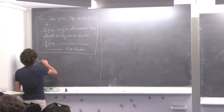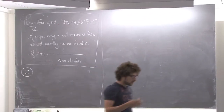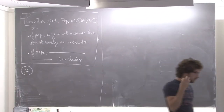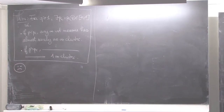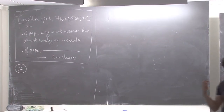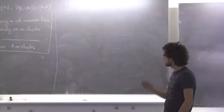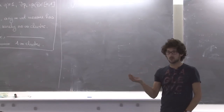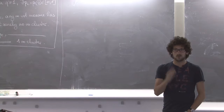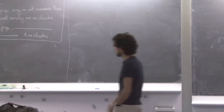As I said, infinite volume measures — random cluster measures — are not defined canonically. I mean, they are defined canonically, but there may be many of them. But we identified these two special measures, phi_0 and phi_1: the infinite volume measure with free boundary conditions and the infinite volume measure with wired boundary conditions.